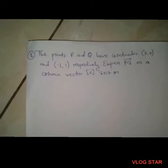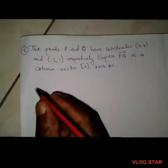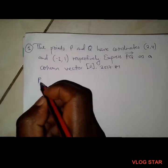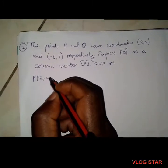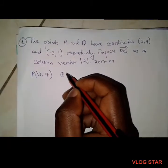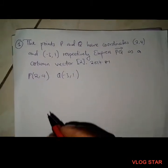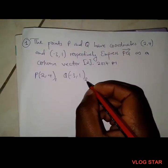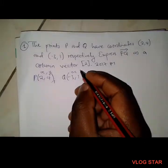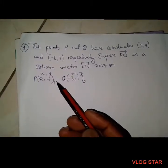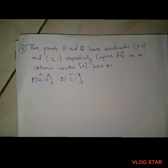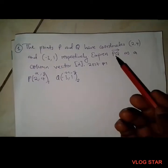I'll show you two simple methods. The first method I like to call the coordinate method. Point P is 2,4 and Q is -3,1. I'll call P coordinate one and Q coordinate two. A coordinate is made up of x,y, so we have x1,y1 for P and x2,y2 for Q. Now let's find vector PQ.